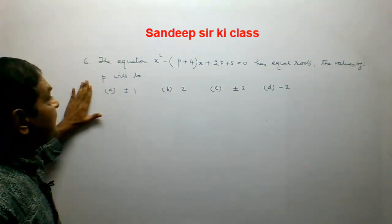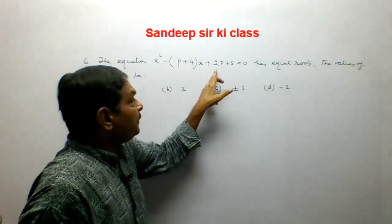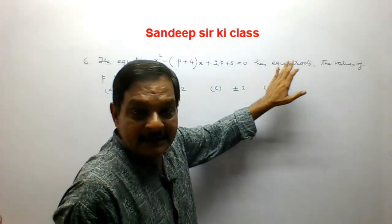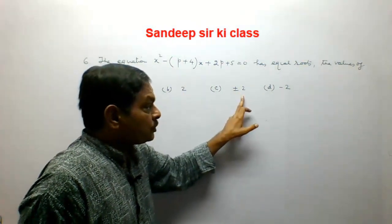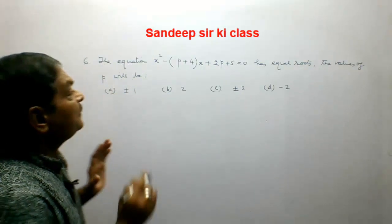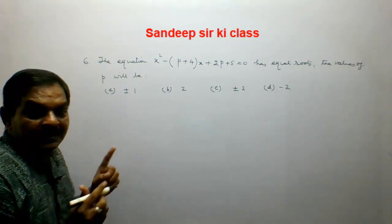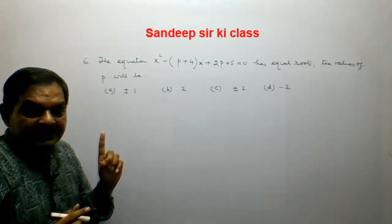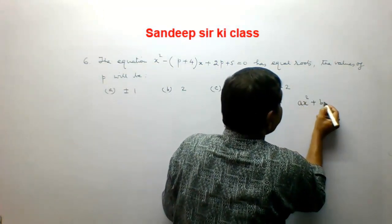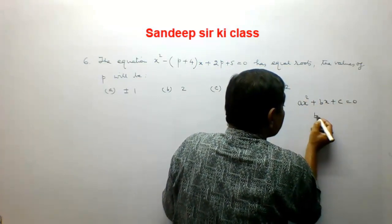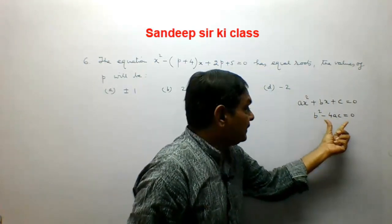Question number 6. The equation x² - (p+4)x + (2p+5) = 0 has equal roots. The value of p will be ±1, ±2, or -2. For any equation having equal roots, its discriminant is equal to 0. For ax² + bx + c = 0, b² - 4ac = 0 is the condition.